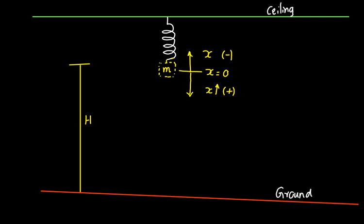As the mass gets deflected, let's say it comes to a certain position where the value of displacement is x. At this new position, the distance between the mass and the ground is h minus x. Now I'm going to define the total potential energy of this mass at this particular position.